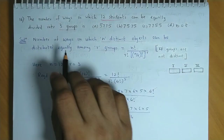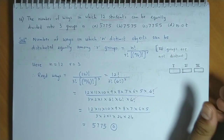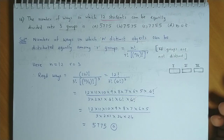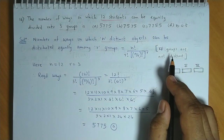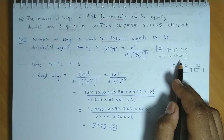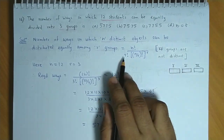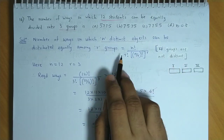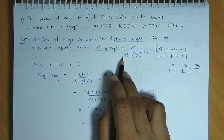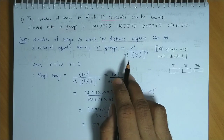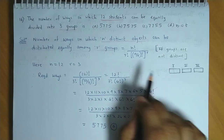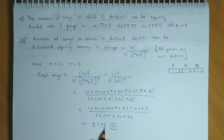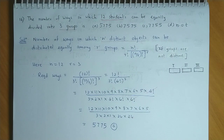Remember: the 3 groups to be formed have no individual identity — any group can be called the first, second, or third group. So the groups are not distinct, which is why we have r! in the denominator. If the groups were distinct, that r! would be removed. The final answer is 5775, option A.